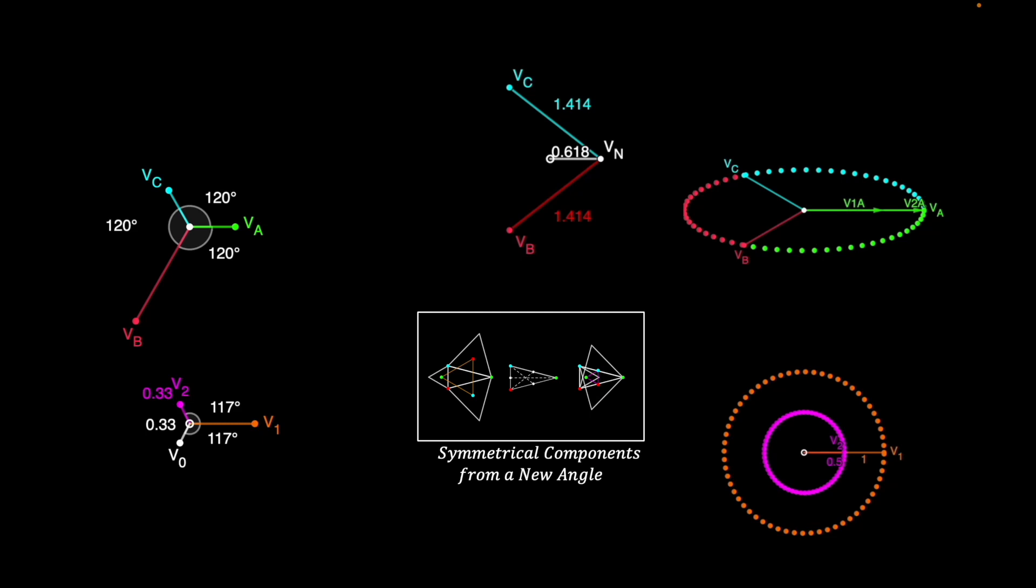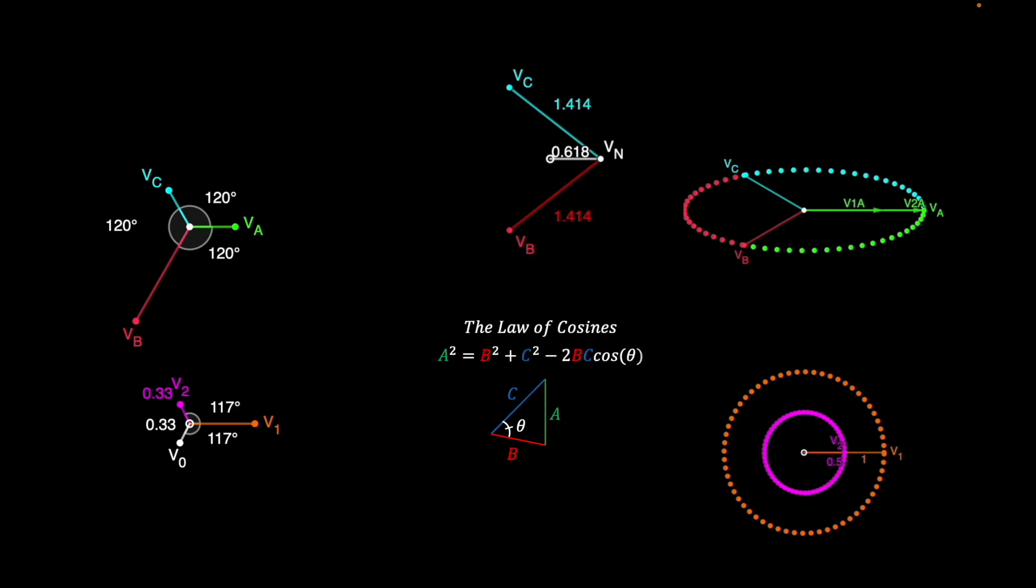I can't begin without mentioning the law of cosines, which allows you to find the third side of a triangle if you know the other two sides and the opposing angle. This equation allowed me to discover many of the facts I'll be presenting in this video.